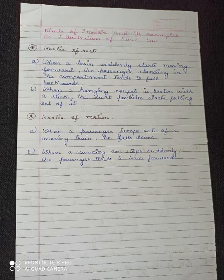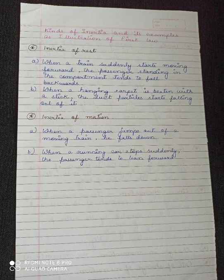Hello students. In our last video we discussed about different laws of motion formulated by Newton. In today's class we will be discussing about some examples related to Newton's first law of motion. In Newton's first law we learnt about inertia, and we know there are two types of inertia: inertia of rest and inertia of motion. First, we will be discussing about some examples related to inertia of rest.